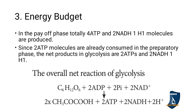Energy budget of glycolysis: In the payoff phase, 4 ATP and 2 NADPH₂ are produced. In the preparatory phase, 2 ATP molecules are consumed. So the net gain is 2 ATP and 2 NADPH₂. The overall reaction: glucose + 2 ATP + 2 NAD⁺ → 2 molecules of pyruvic acid (CH₃COCOOH) + 4 ATP + 2 NADPH₂.